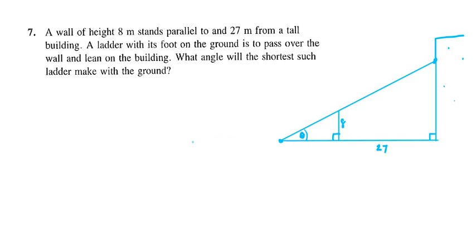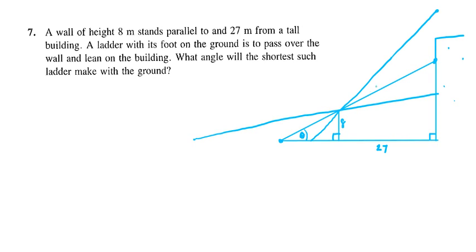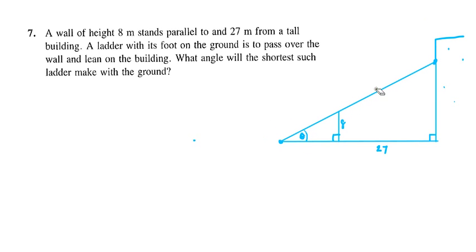You can see that if we started way back here, we could have a ladder that goes just over the wall and touches here, but that line is longer. Somewhere over here we could have a ladder that hits the 8-meter wall and goes all the way up, but that line also looks a bit longer than the one drawn. So somewhere around this angle measure might be the shortest such ladder — you can see there is an angle we're looking for.